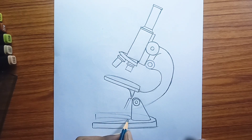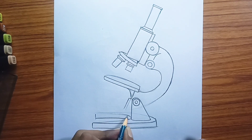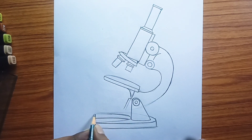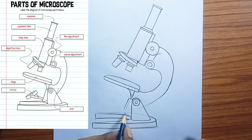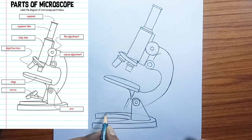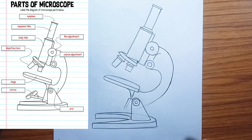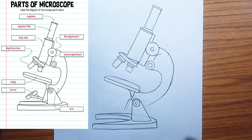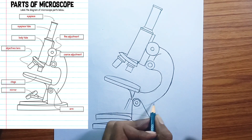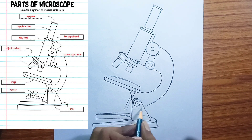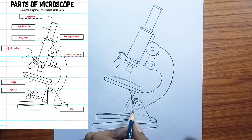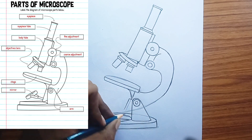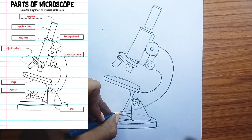So let me describe each of the labeled parts of the microscope shown in the diagram. Eyepiece, or ocular lens — this is the lens closest to your eye when you look through the microscope. Its primary function is to magnify the image produced by the objective lens, usually by 10x or 15x.